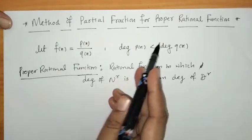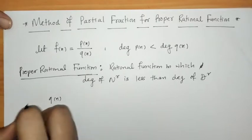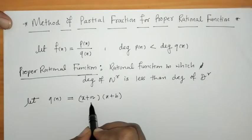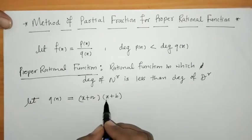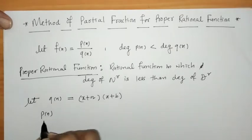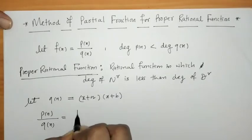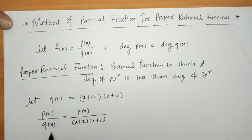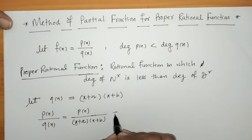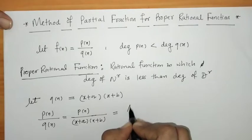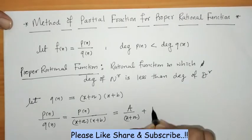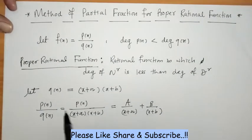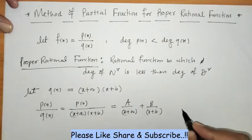Now, let us consider q(x) factorized as (x+a)(x+b) — that is, non-repeated linear factors, where a and b are constants that may be positive or negative. Then p(x)/q(x) can be resolved in partial fractions as A/(x+a) + B/(x+b), where A and B are constants which we have to find.